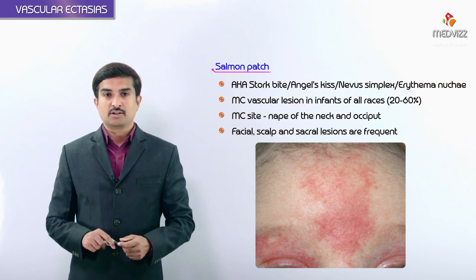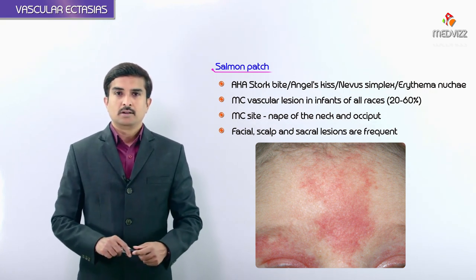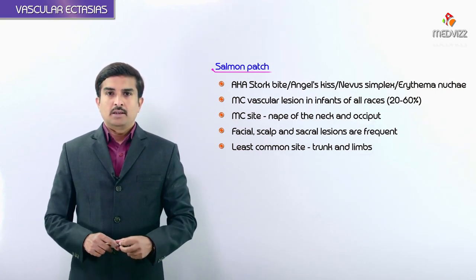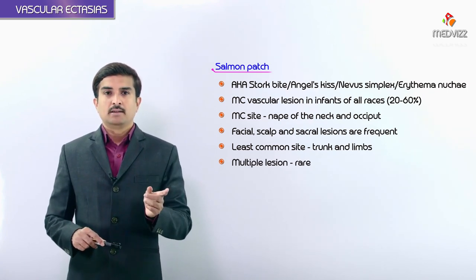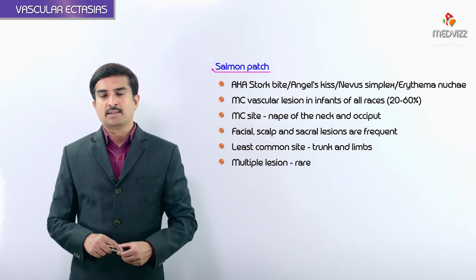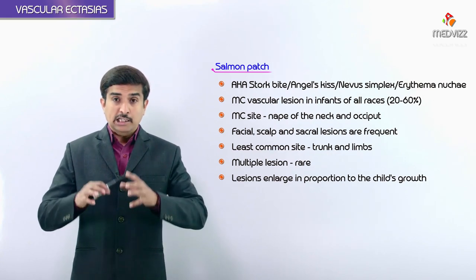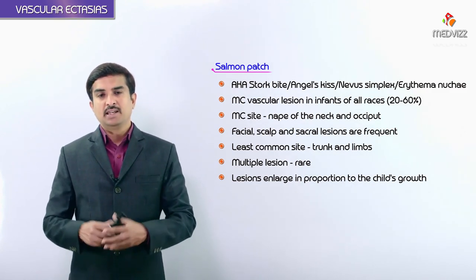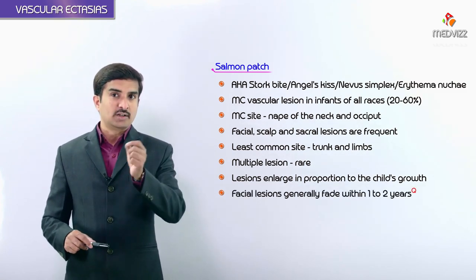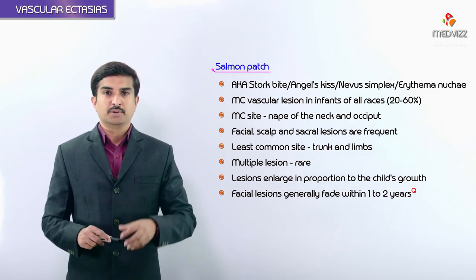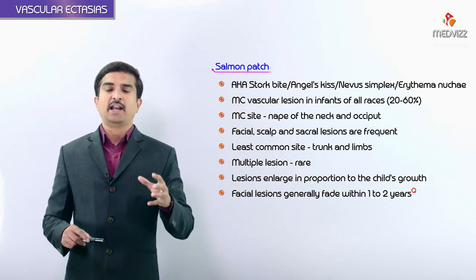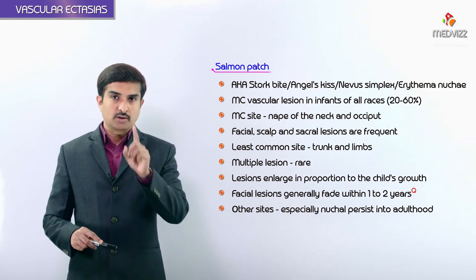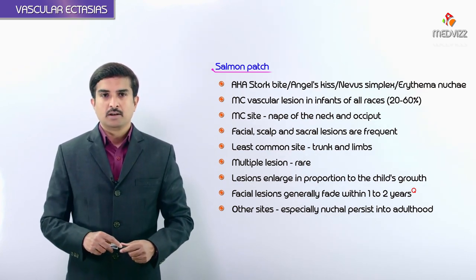Facial, scalp, and sacral lesions are also seen in the vast majority of cases, while the trunk and limbs are less commonly affected. These lesions enlarge in proportion to the child's growth. Facial lesions are bright pink at birth but generally fade within 1 to 2 years, whereas lesions at other sites — especially the nuchal region — persist into adulthood.